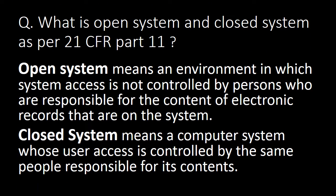Next question: what is an open system and a closed system as per 21 CFR Part 11? An open system means an environment in which system access is not controlled by persons who are responsible for the content of electronic records on that system. Whereas a closed system means a computer system whose user access is controlled by the same people responsible for its contents.